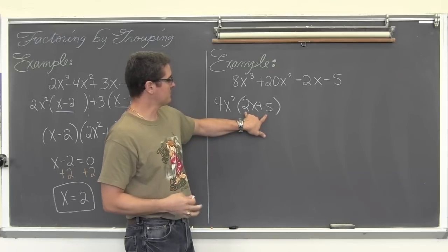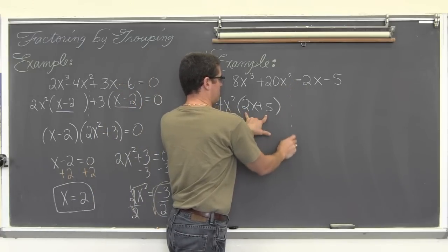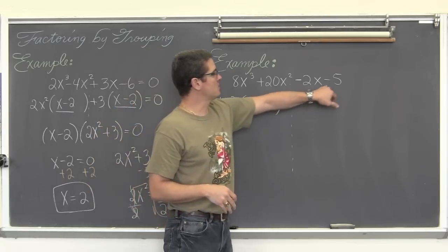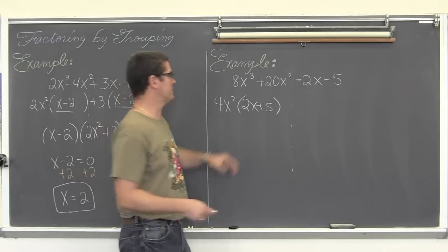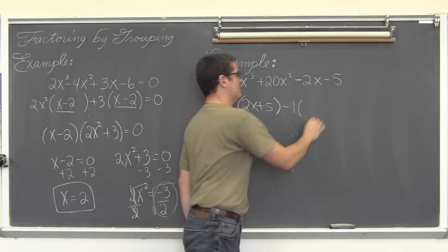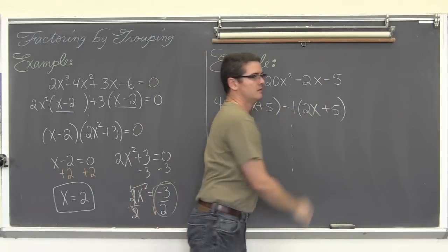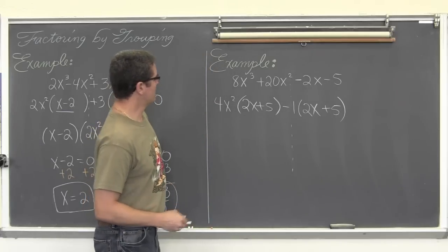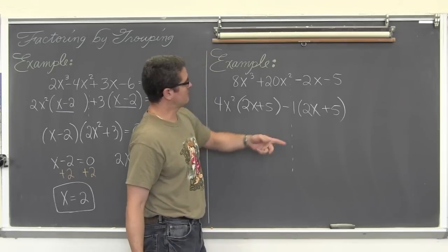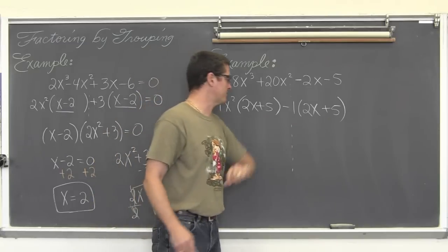We have a positive 2x and a positive 5 from the first two terms, but the last two terms have negative 2x and negative 5. I need them to be positive, so we are going to divide out by negative 1. Negative 2x divided by negative 1 is positive 2x. Negative 5 divided by negative 1 is positive 5. So the negative 2 divided by negative 1 gives positive 2x, and the negative 5 divided by negative 1 gives positive 5.